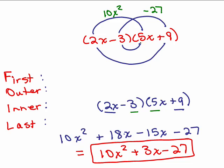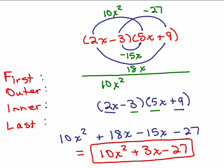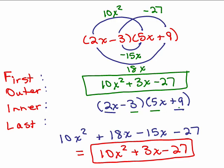Multiplying those inner two gives negative 15x, and the last big arc — 2x times 9 — is 18x. The outer and inner are like terms, so you add them up: 10x squared, then negative 15x plus 18x is plus 3x, and bring down the constant negative 27. Same answer. It depends on your preference — whether you write the four terms horizontally with FOIL or draw a smiley face.